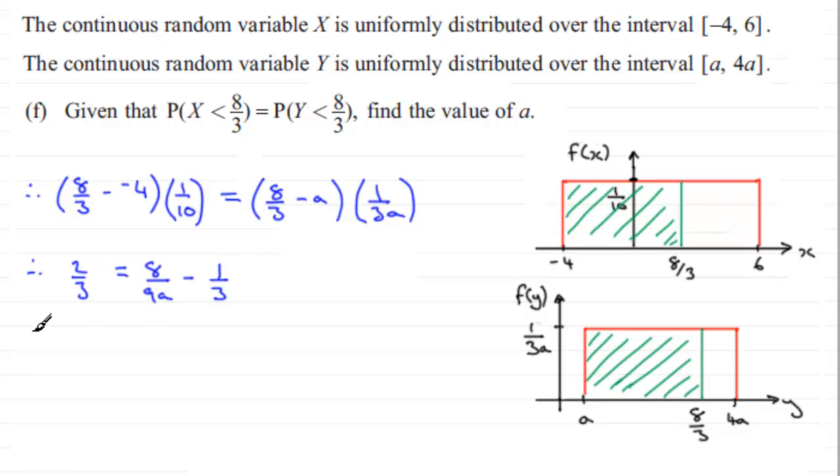And I can see that if I add one third to both sides, two thirds plus one third is going to give me 1. And that's going to equal 8 over 9A. Multiply both sides by 9A and you get 9A equals 8. And now divide both sides by 9 and you end up with A equaling 8 ninths.